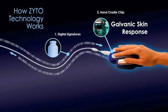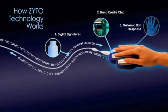Galvanic skin response, or GSR, is an established technology that measures fluctuations in electrical conductivity of the skin as the body responds to various stimuli. One application of GSR that many people are familiar with is lie detector testing.